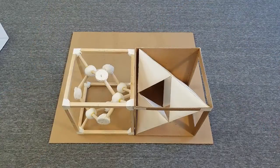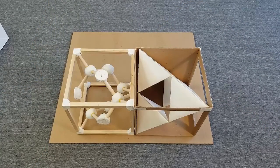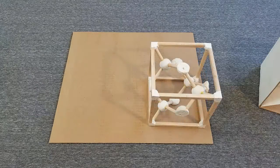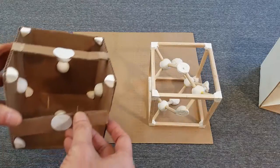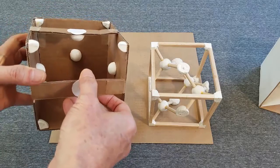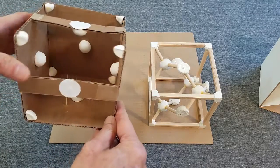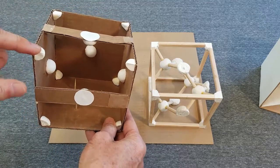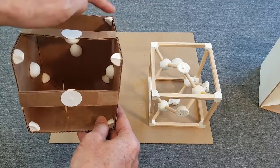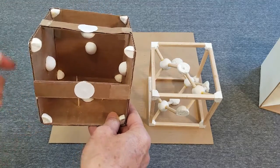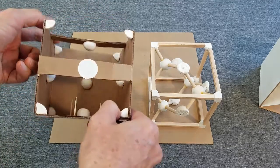In case you still have trouble visualizing the atomic positions, here's an alternative model using just two cubes. On the unit cell, place one eighth of an atom at each corner, and half an atom at the center of each face.